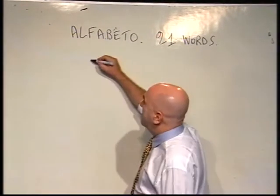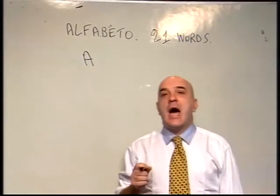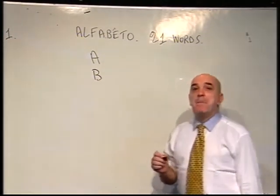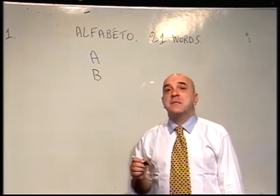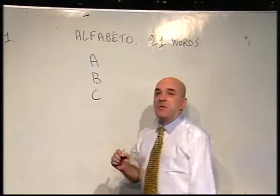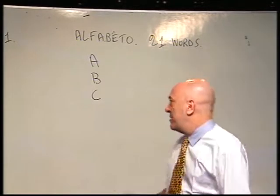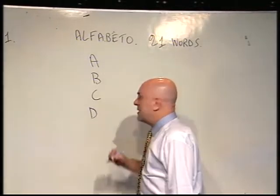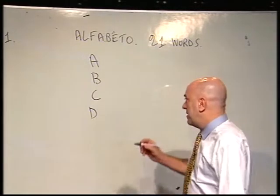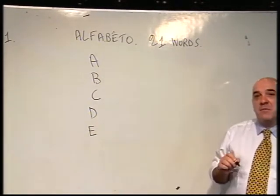The first letter is A — pronounced after me: A. After that we write letter B — you pronounce: B. Letter number 3, we pronounce: C. Pronounced after me: C. Number 4: D — pronounced after me: D. Number 5: E — pronounced after me: E.